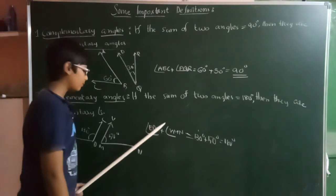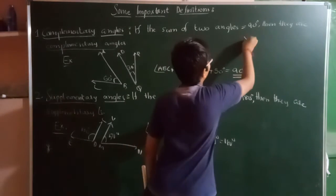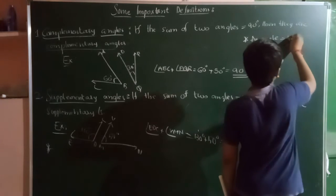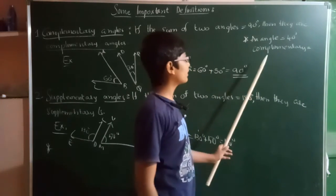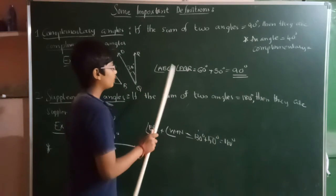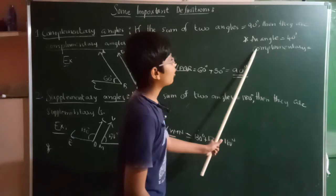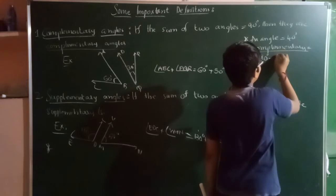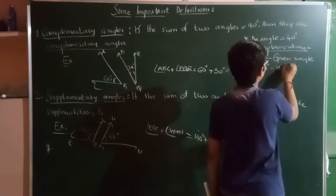Now, let's see how to find the complement of an angle. Suppose the given angle PQR is equal to 40 degrees. The complementary angle is the one which, when added to 40 degrees, gives 90 degrees. The complementary angle of an angle is always 90 degrees minus the given angle. So, 90 degrees minus 40 degrees gives us 50 degrees.